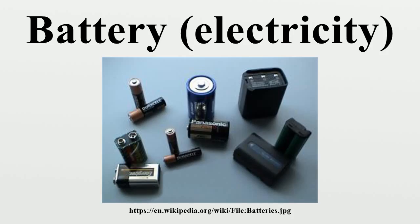Categories and types of batteries: Batteries are classified into primary and secondary forms. Primary batteries irreversibly transform chemical energy to electrical energy. When the supply of reactants is exhausted, energy cannot be readily restored to the battery.